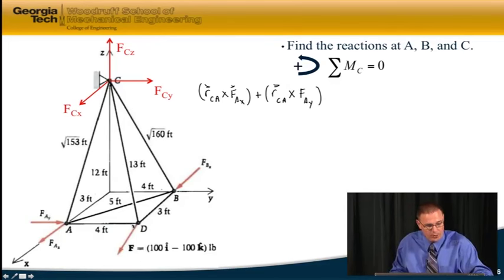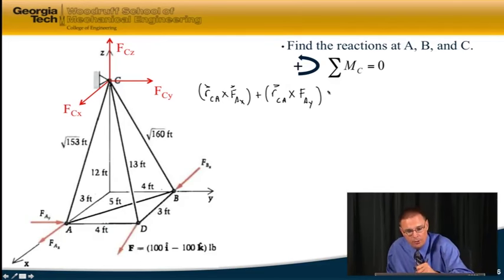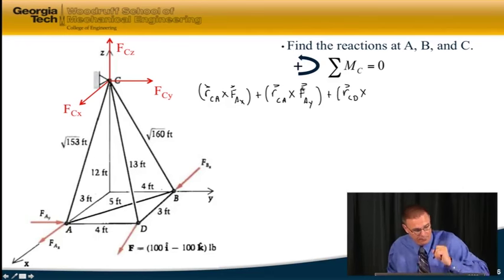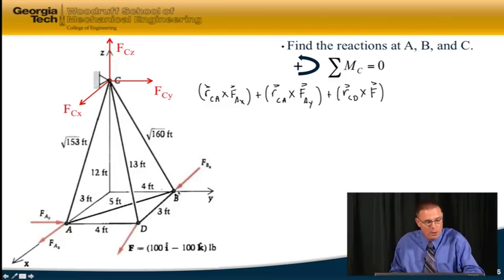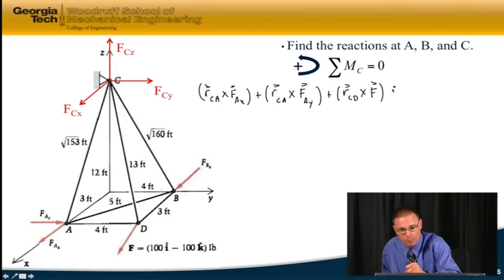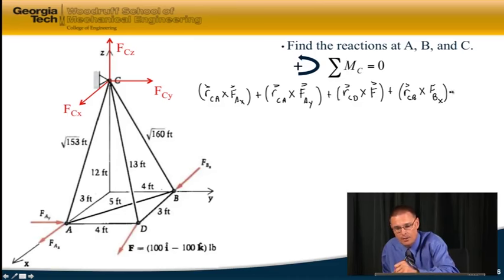And then we have a force here at D, so we're going to go plus R_CD crossed with F, which is given. And then finally one more force that's going to cause rotation about point C, and that's plus R_CB crossed with F_BX equals zero.